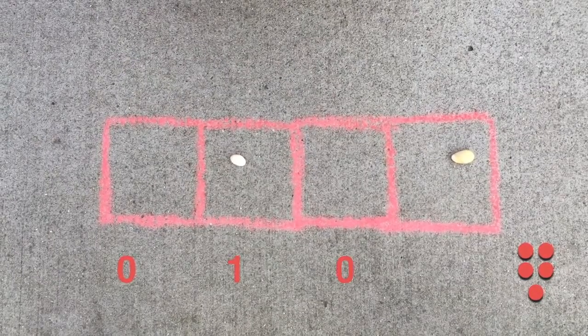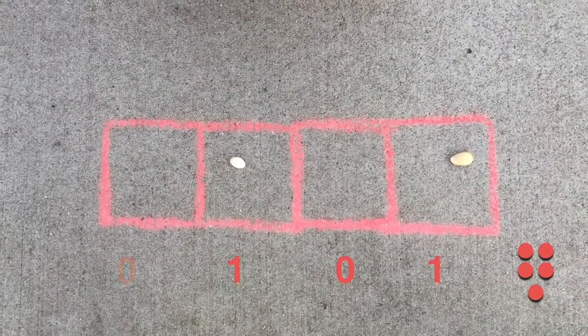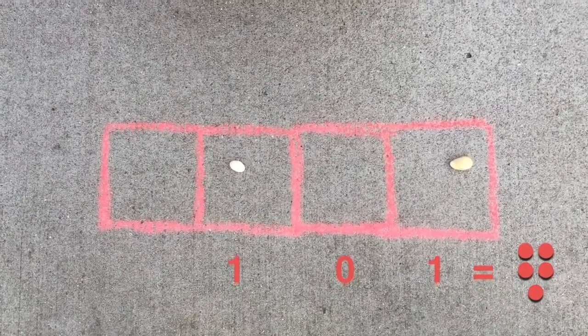0, 1, 0, 1, or 1, 0, 1. And that's the binary encoding for the number five.